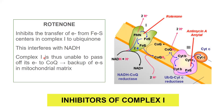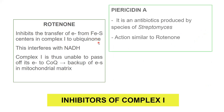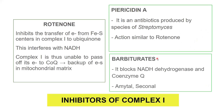Because of rotenone, complex one is unable to transfer its electrons and there will be a backup of electrons in the matrix. A similar mode of action is seen for piericidin A, an antibiotic extracted from Streptomyces species. Barbiturates also block NADH dehydrogenase and coenzyme Q — examples include amytal and seconal. All of these are inhibitors of complex one, the NADH dehydrogenase complex.